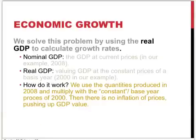We can solve this problem of inflation pushing up the value of GDP by using real GDP to calculate growth rates. Nominal GDP is described as the GDP at current prices — in this example, the prices of 2008. Real GDP is calculated by valuing the GDP at constant prices, which are the prices of some base year that you choose — in our case, the year 2000. The solution is to use the quantities produced in 2008, but multiply them with the constant base year prices of 2000. There is no inflation in these prices that can push up the value of GDP.